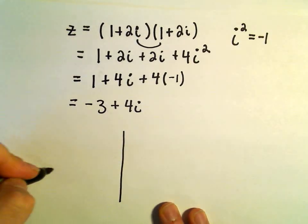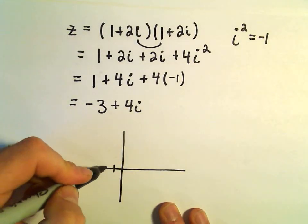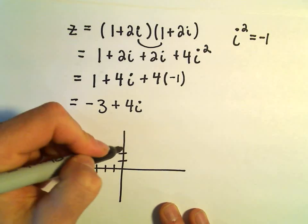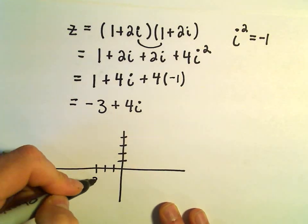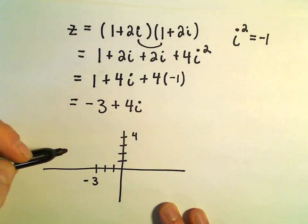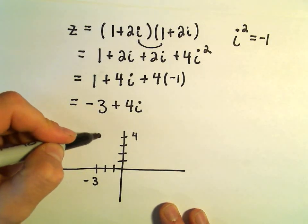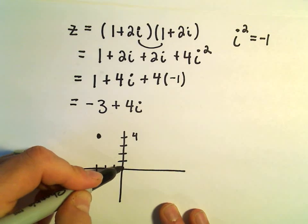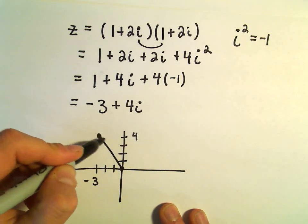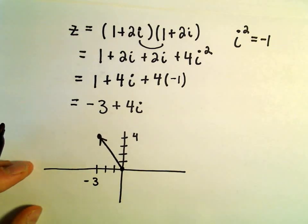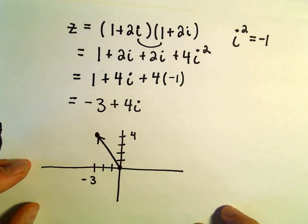Same thing, maybe we can make it a little more to scale. 1, 2, 3, 1, 2, 3, 4. I've basically just gone 3 units to the left, 4 units up. That's where I'm going to put my dot. We'll make a vector from the origin out to that dot. So we've now graphed our complex number negative 3 plus 4i.